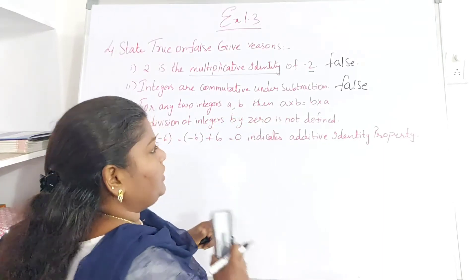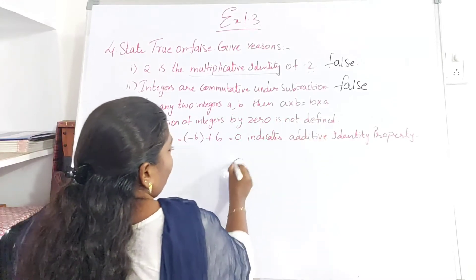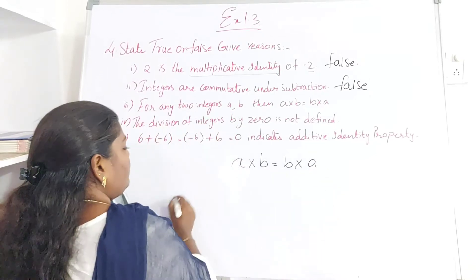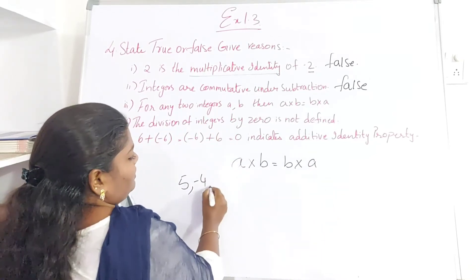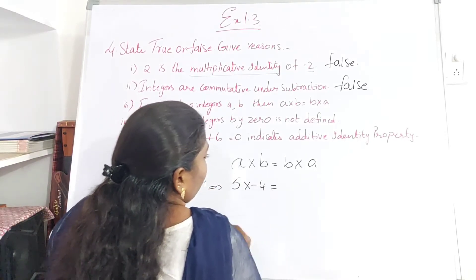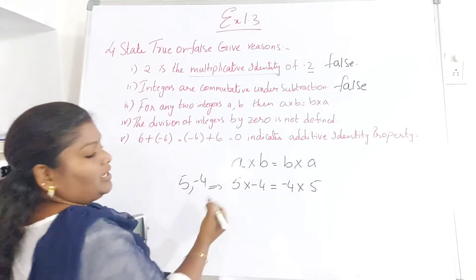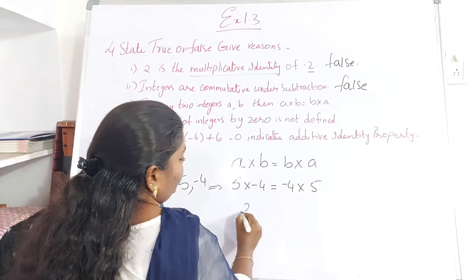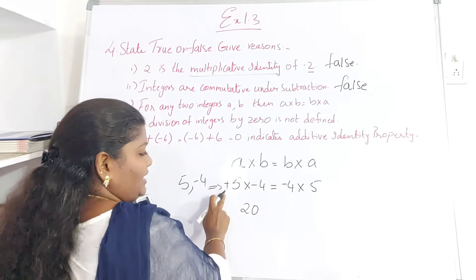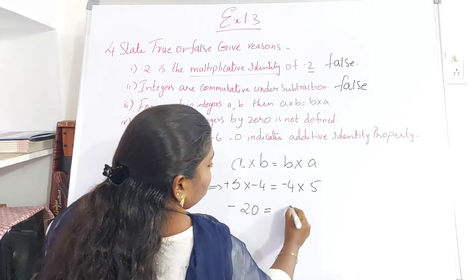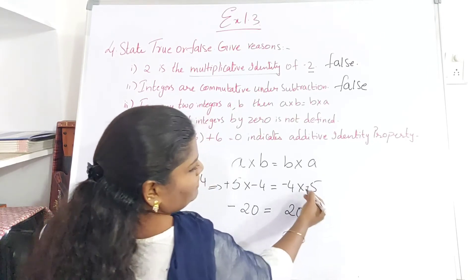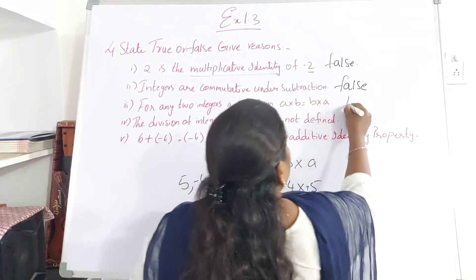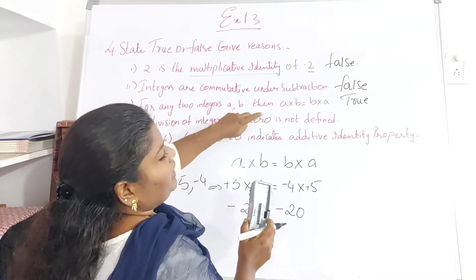Next, commutative property under multiplication: for any integers, a into b should equal b into a. Taking 5 and minus 4: 5 into minus 4 should equal minus 4 into 5. For the left side, 5 times 4 is 20; plus into minus is minus, giving minus 20. For the right side, 4 times 5 is 20; minus into plus is minus, giving minus 20. So minus 20 equals minus 20. This statement is true — for any integers, a into b equals b into a.